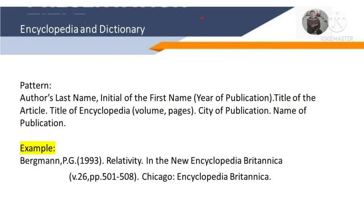For encyclopedia and dictionary entries, the pattern is: author's last name, initial of the first name, year of publication, title of the article, title of the encyclopedia, volume, pages, city of publication, name of publisher. Example: Bergman, P. (1993). Relativity. Encyclopedia Britannica, Vol. 26, pp. 501–508. Chicago: Encyclopedia Britannica.